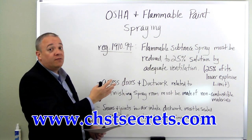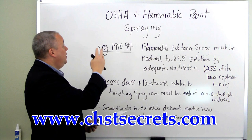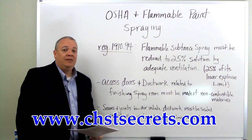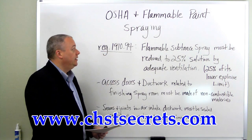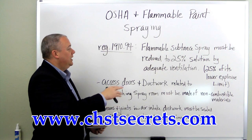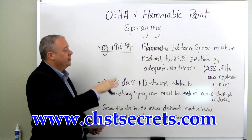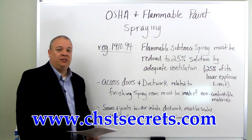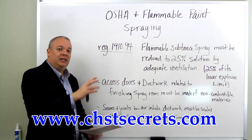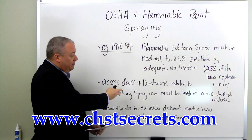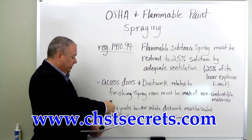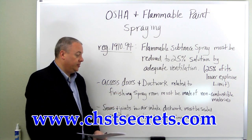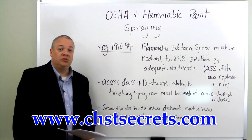This is a basic overview of OSHA regulation 1910.94 and subsections related to flammable paint and flammable substance spray. Safety requires that it be reduced to 25% of the lower explosive limit through adequate ventilation, that the ventilation and doors leading into the room be made of non-combustible materials, and that they be sealed against release of hazardous vapors, fumes, or mists.